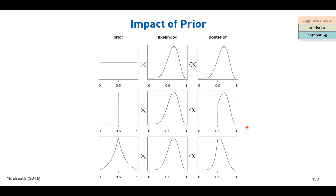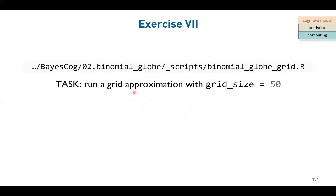If you want to implement the prior that allows only values between 0.5 and 1, you set the grid to start at 0.5 and end at 1. This corresponds to the truncated prior we discussed. You can run the exercise code to see how changing the number of grid steps from 20 to 50 produces a finer approximation, and compare the unstandardized vs. standardized posterior plots.